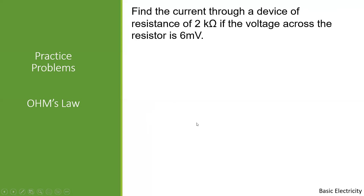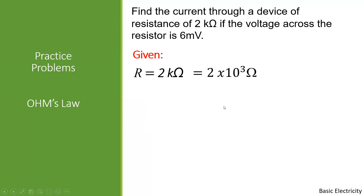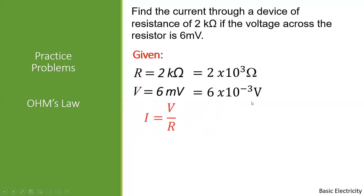Next problem: find the current through a device with a resistance of 2 Kilo Ohms if the voltage across the resistor is 6 millivolts. Given: R = 2 Kilo Ohms = 2 × 10³ Ohms. Voltage = 6 millivolts — milli is times 10 to the negative 3 — so we write 6 × 10⁻³ volts. The missing part is current.